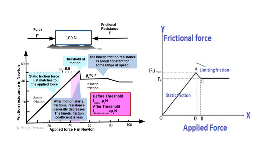Remember, dynamic friction is also a little lower than limiting friction. When we exceed this limit, the object starts to move — that is dynamic friction. On the graph, the region from 0 to point A indicates static friction, where static friction gradually increases until limiting friction. Beyond that point, the frictional force cannot exceed the limit — that is limiting friction — and the subsequent region represents dynamic friction.